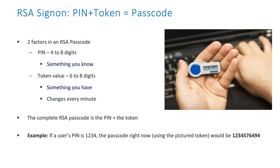The token is not the only authentication requirement. Two factors are involved in RSA authentication: the 4- to 8-digit PIN, which is something you know, and the 6- to 8-digit token value, which is something you have. The RSA passcode that you enter is not complete unless it contains both the PIN and token.